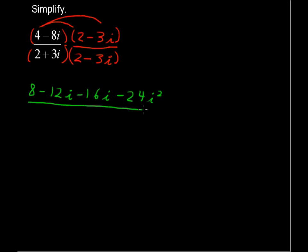In the denominator we have 2 times 2 and 2 times negative 3i and then we'll multiply the 3i times the 2 and the 3i times the negative 3i. This is the product of a sum and a difference—we're going to get a difference of squares.